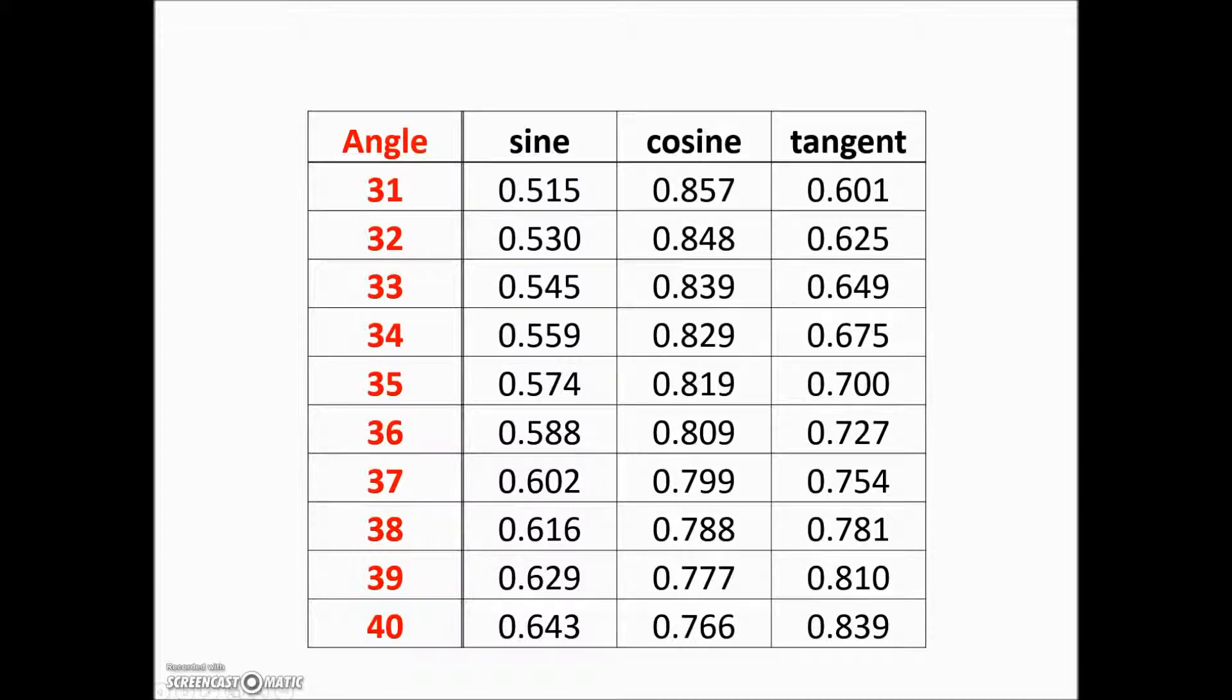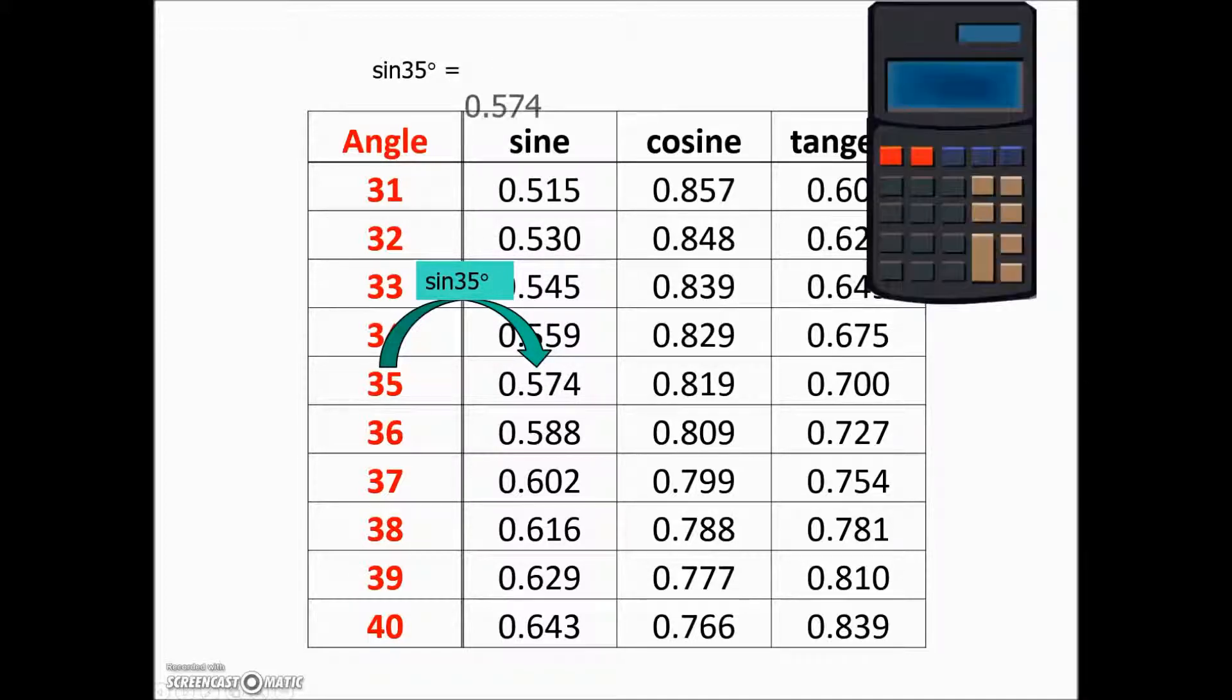So here we have our table, and if the question was what is the ratio for the sine of an angle in a right triangle having a measure of 35 degrees, we can look down until we get to 35 corresponding with the sine and answer our question.